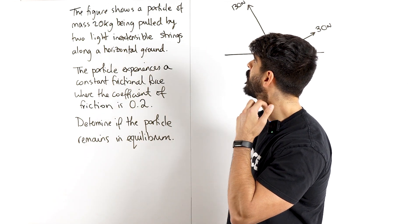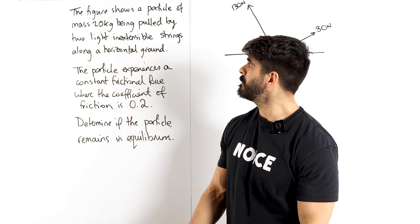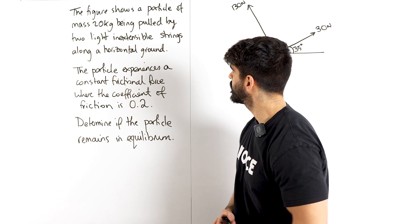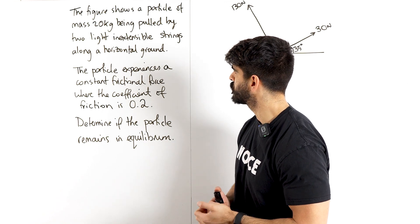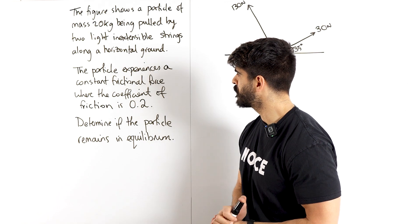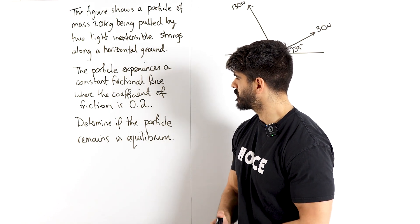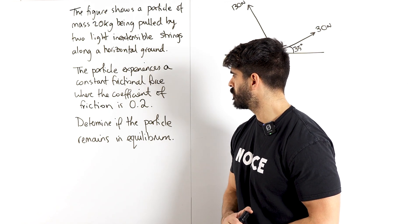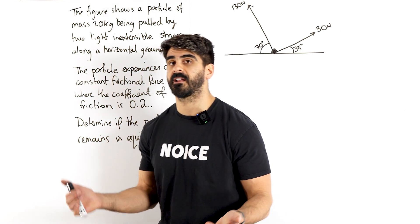It says, the figure shows a particle of mass 20 kg being pulled by two light inextensible strings along a horizontal ground. The particle experiences a constant frictional force where the coefficient of friction is 0.2. Determine if the particle remains in equilibrium. So they don't tell us.